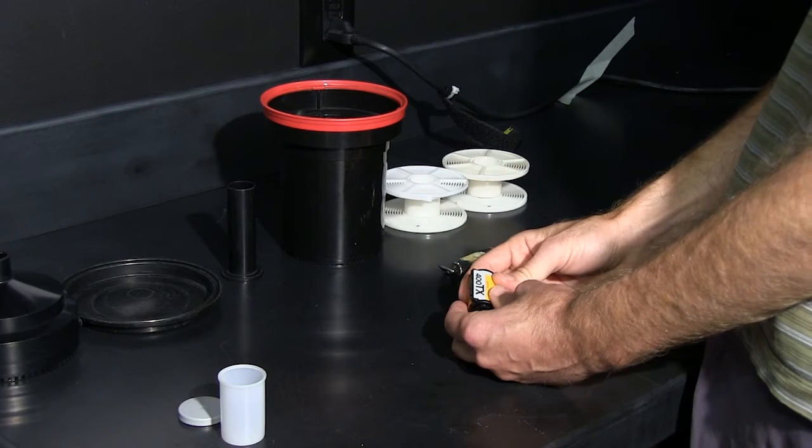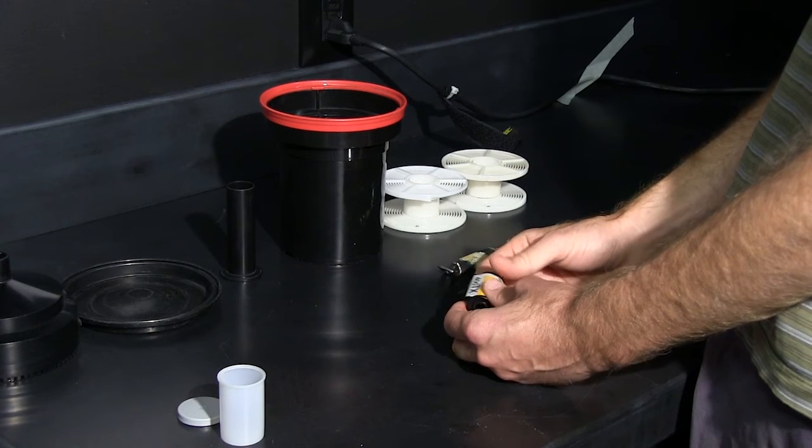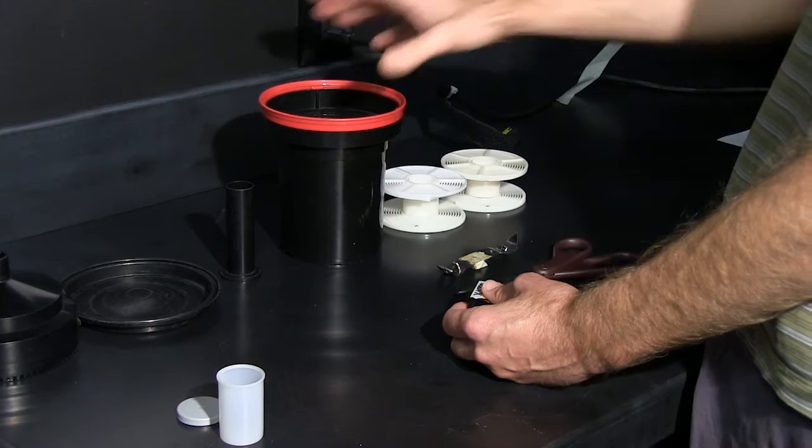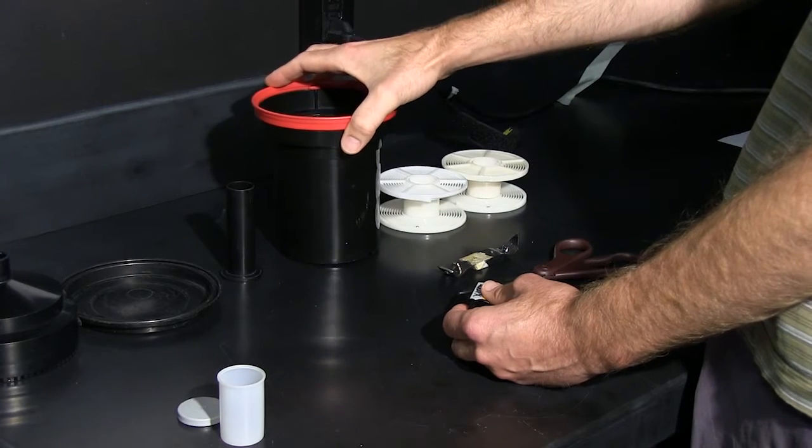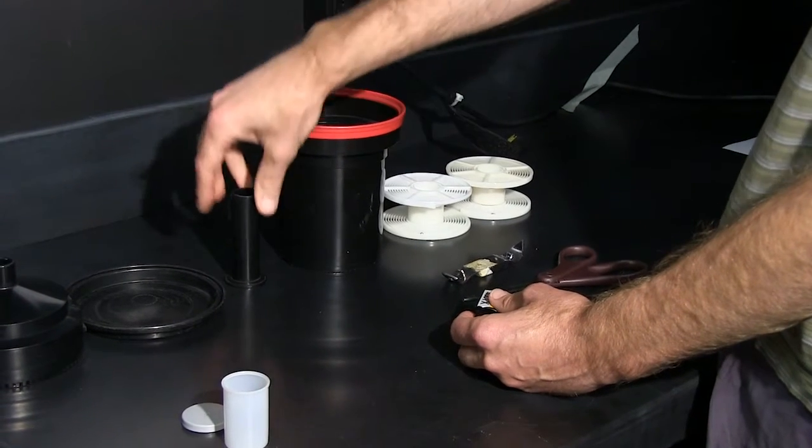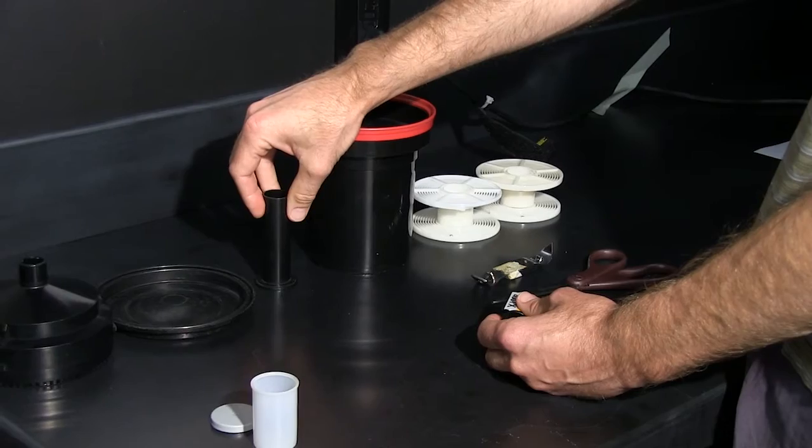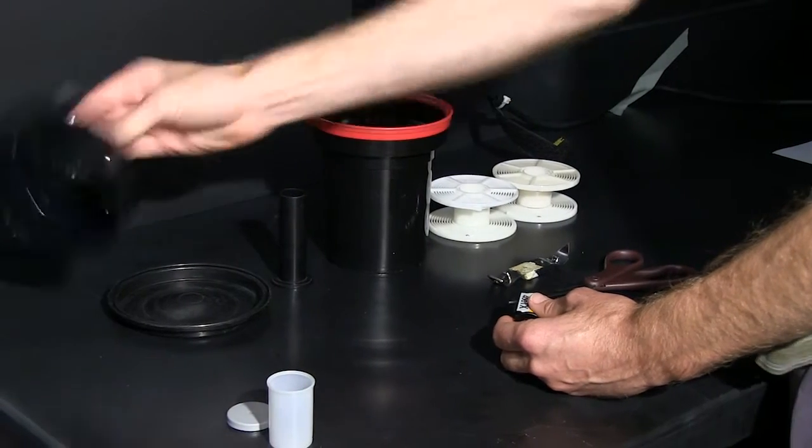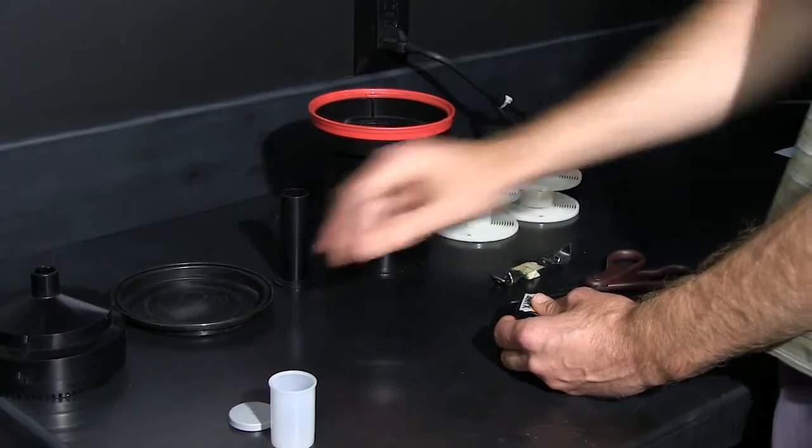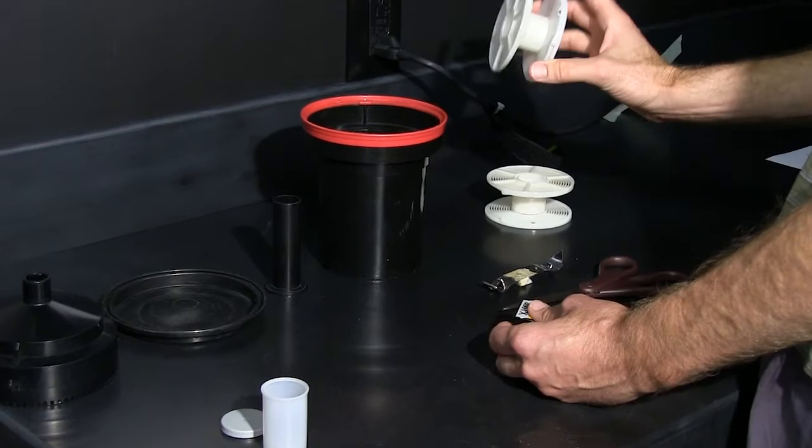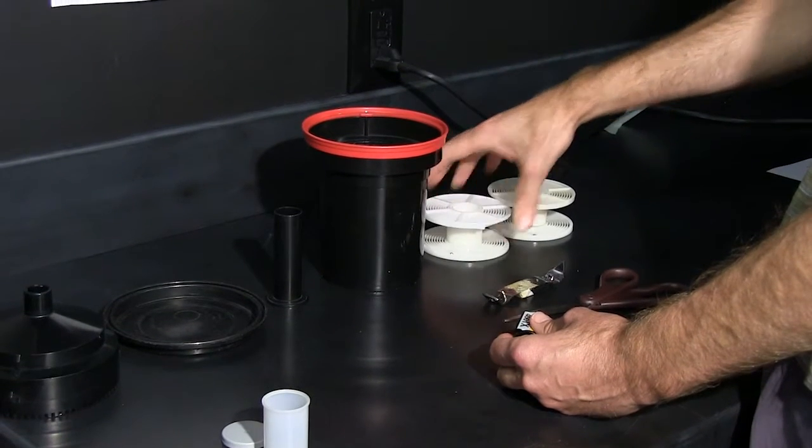I brought in everything that I'm going to need to process my film here today. I've got my canister that's going to hold the rolls of film, the center column that's going to go in there, the funnel as well as the top, and then I've got two empty reels here to put the film into.